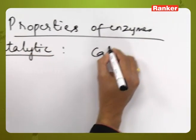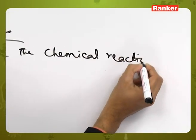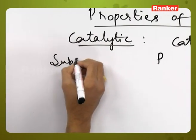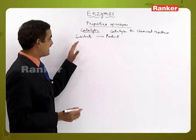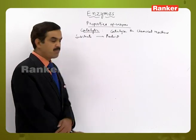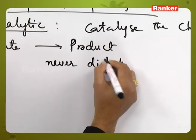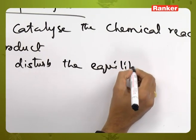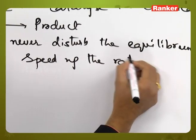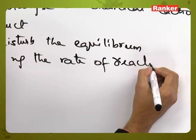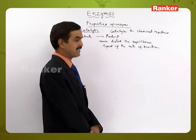Enzymes catalyze reactions, helping in the conversion of the substrate molecule into the product molecule. In this process, they never change or disturb the equilibrium of the reaction. What they do is speed up the rate of reaction, reducing the time taken for the reaction to complete. This is the catalytic ability exhibited by enzymes.